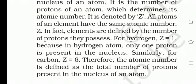For example, Z equals 1 because in a hydrogen atom only one proton is present in the nucleus. Similarly, for carbon Z equals 6. Therefore, the atomic number is defined as the total number of protons present in the nucleus of an atom. Jitni number of protons rahenge, woh us particular atom ka atomic number kehlayega.